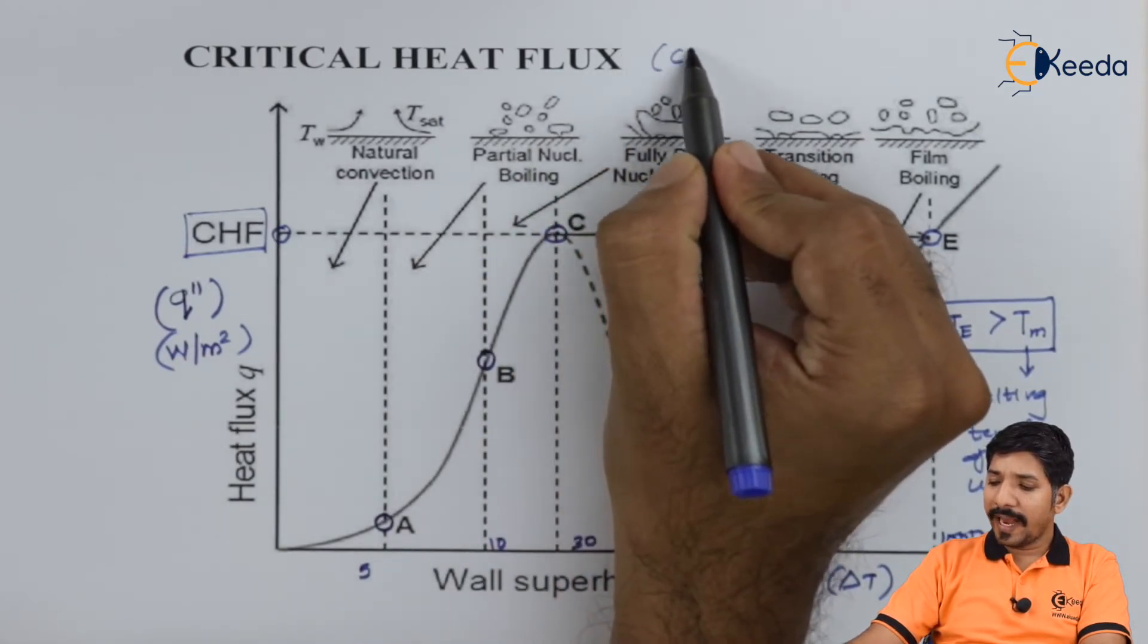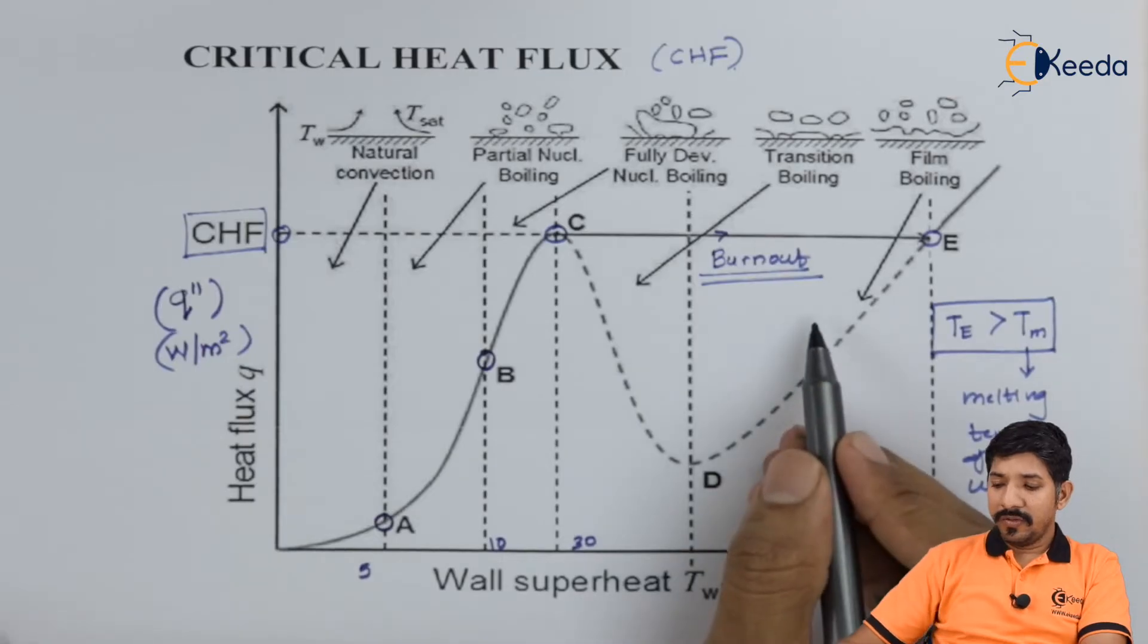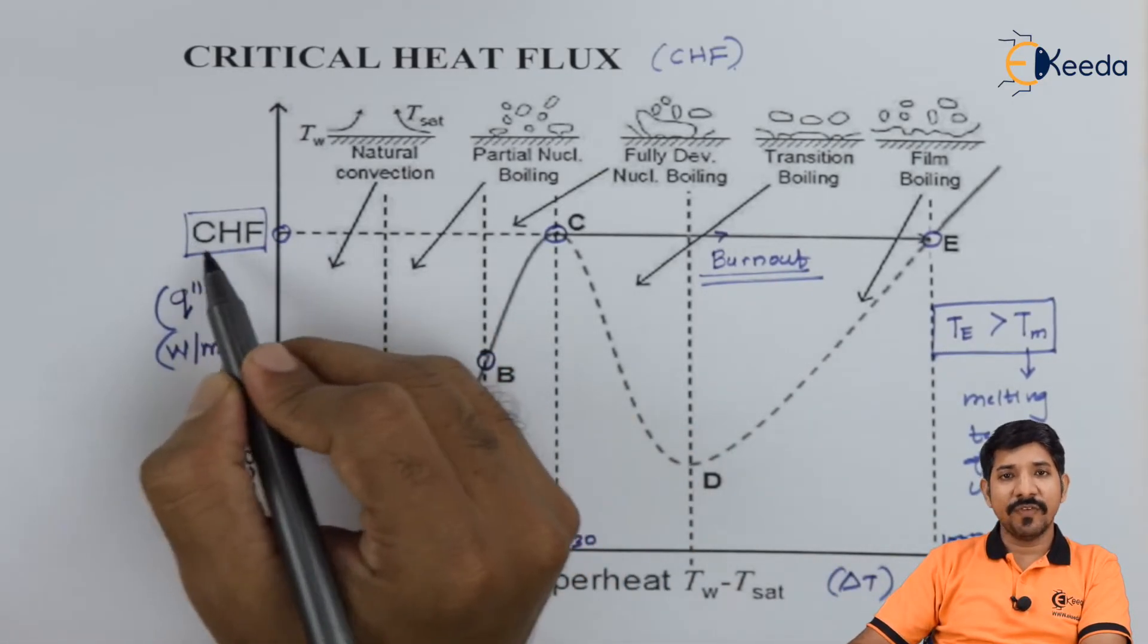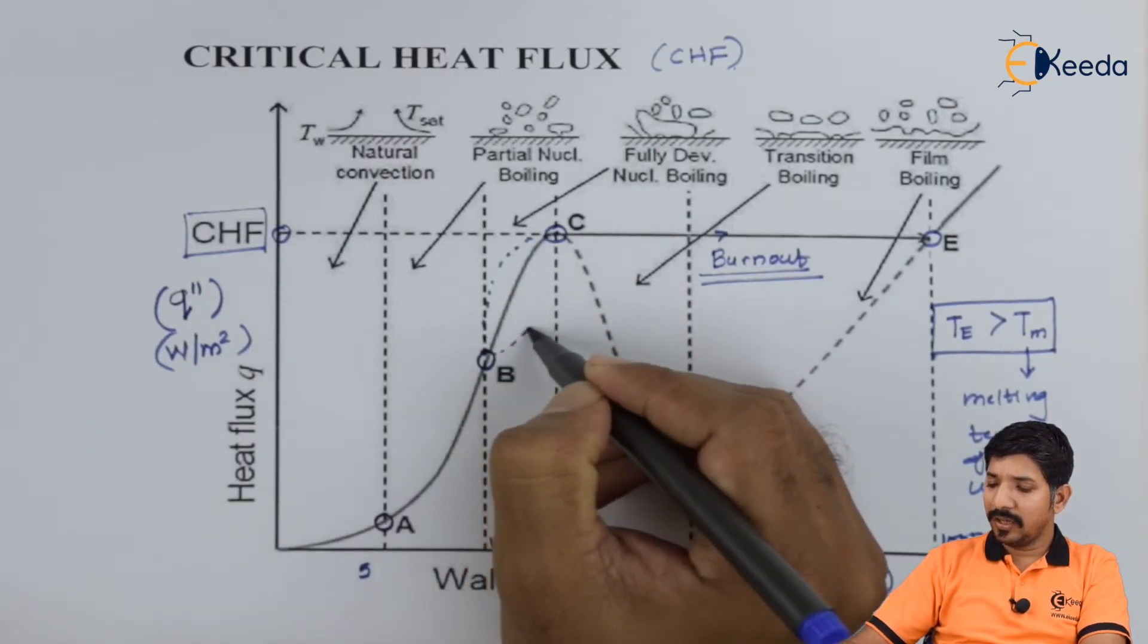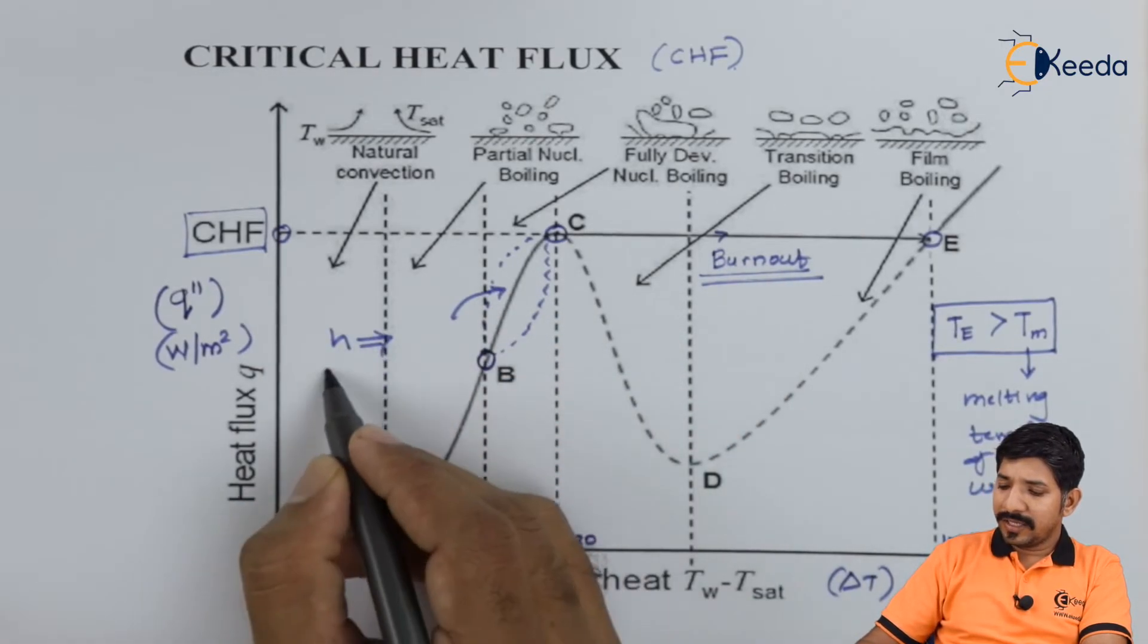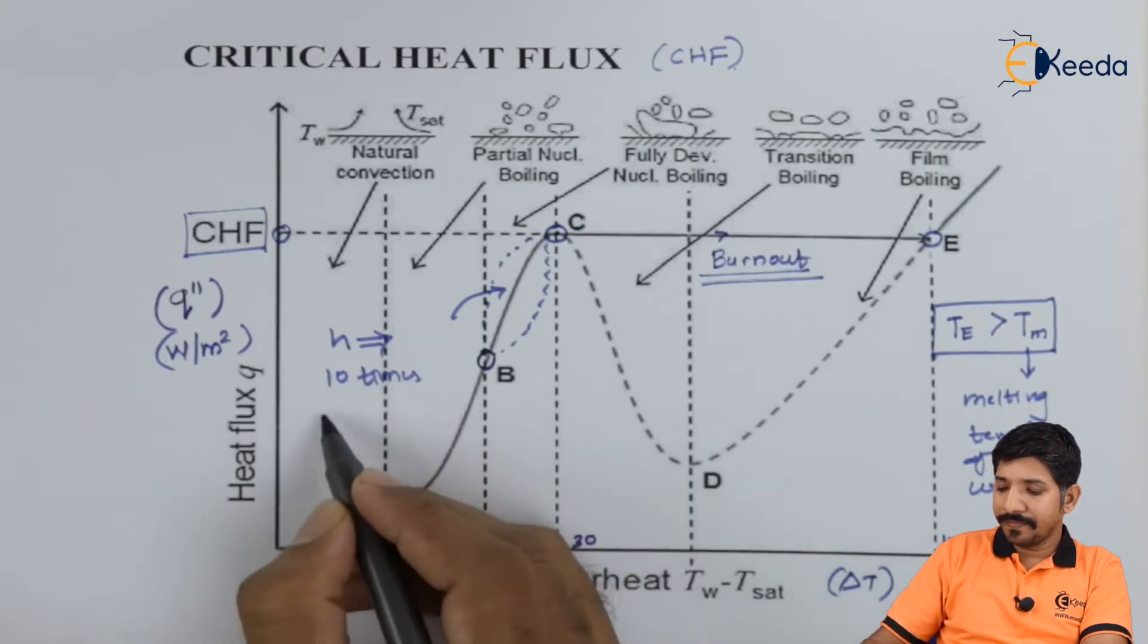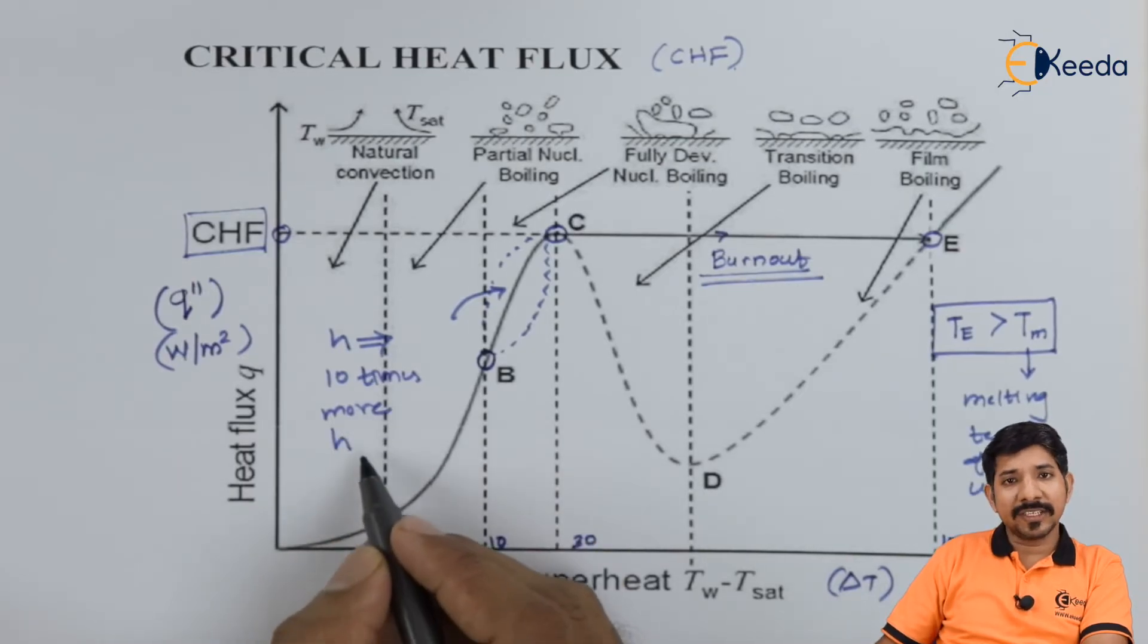The famous acronym for this is CHF. We really have to emphasize on finding the value of CHF for various scenarios. Why? Because we are always interested in this area. For this area, the value of h is 10 times, 10 times more than any free convection or forced convection.